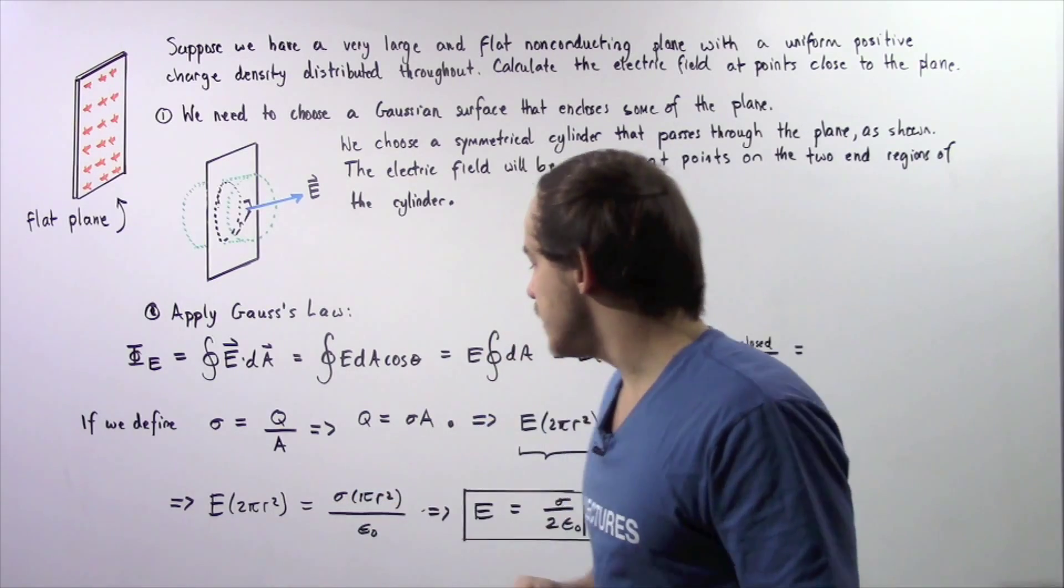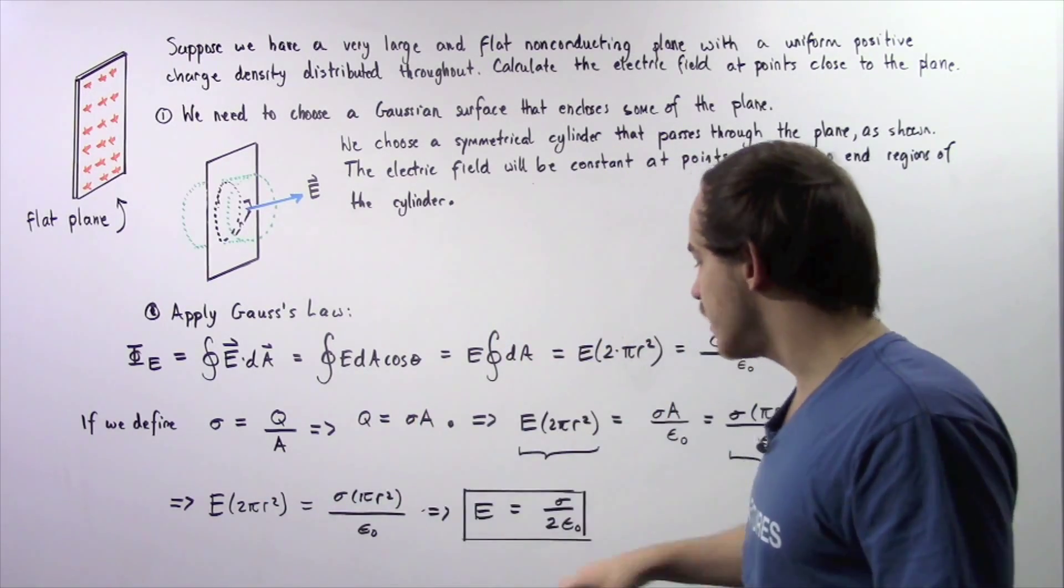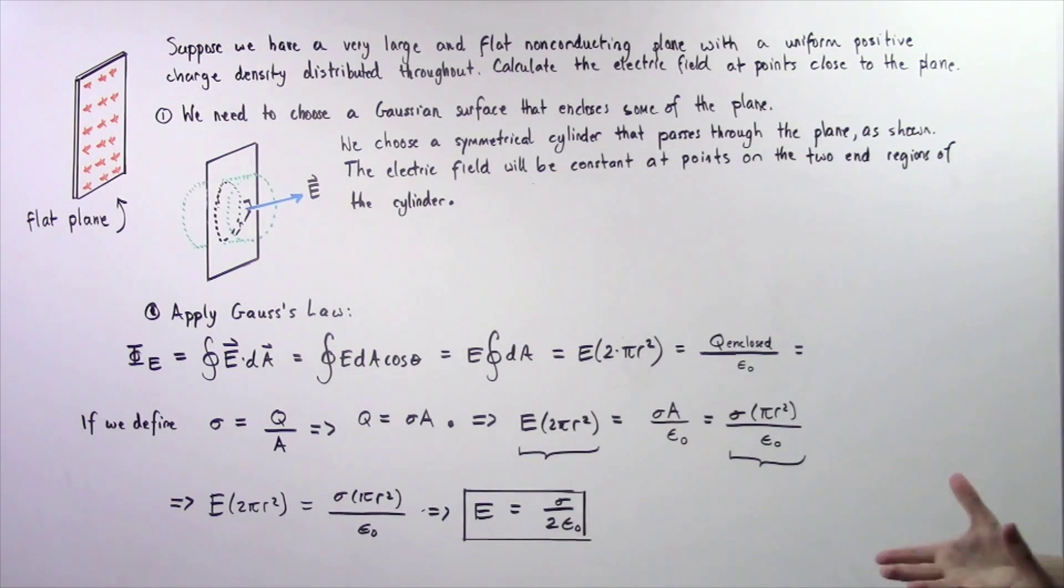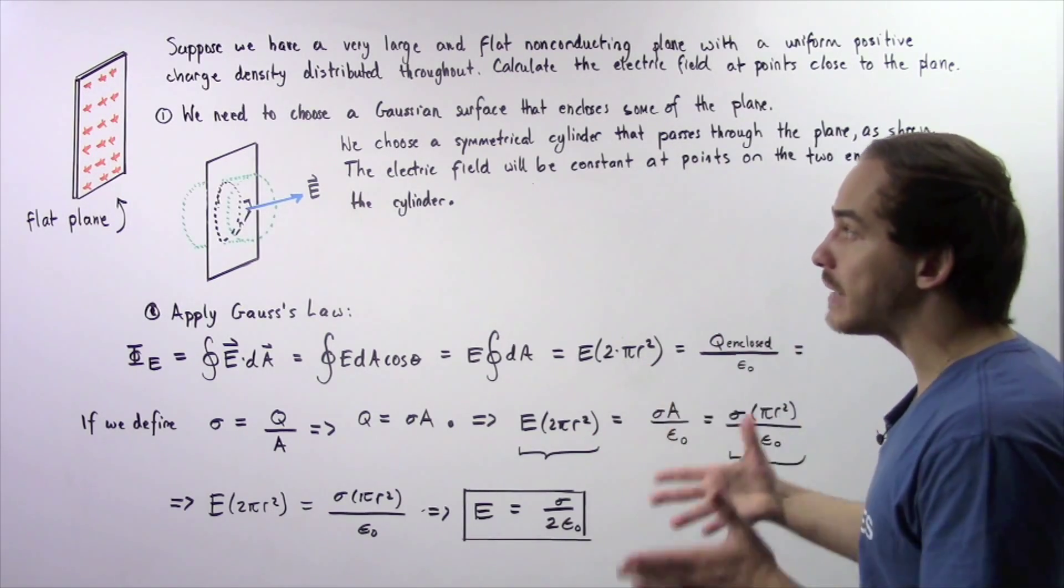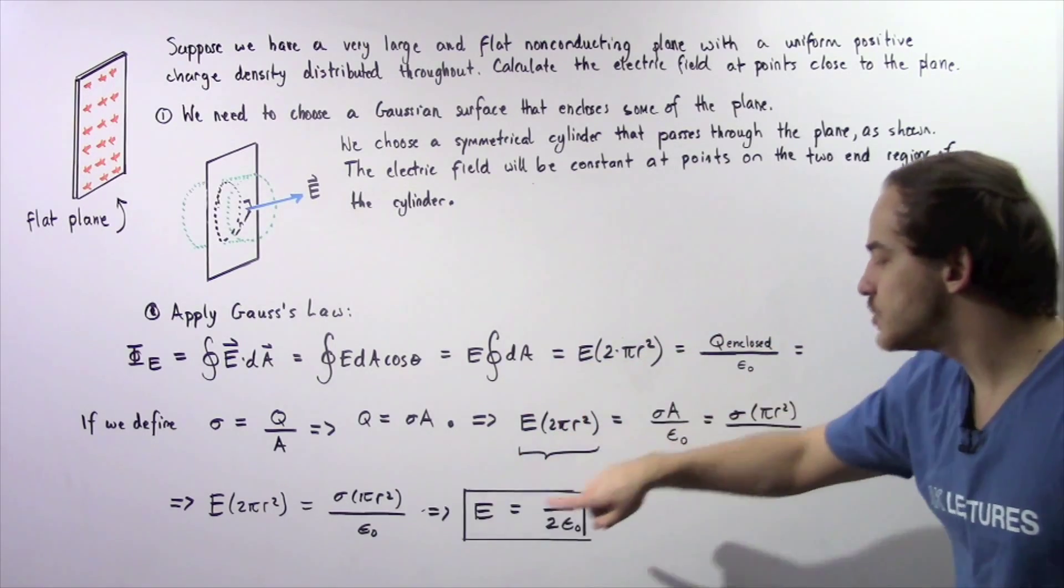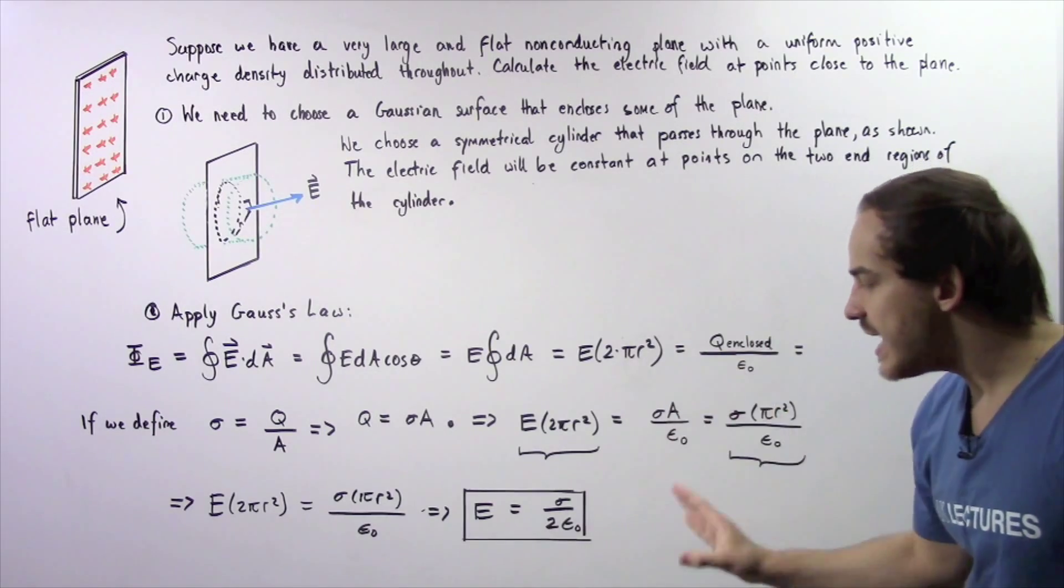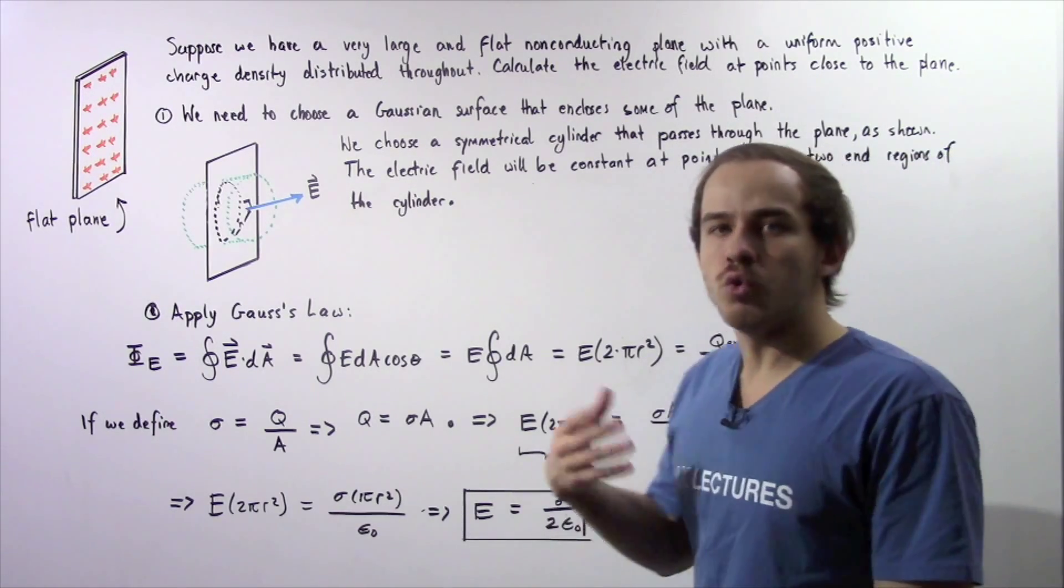We solve for the electric field and notice the pi r squared will cancel and we're left with the following result. The electric field close to an infinitely long flat plane is equal to sigma divided by 2 multiplied by epsilon naught, which is the same exact result that we obtain when we use Coulomb's law.